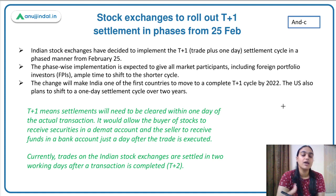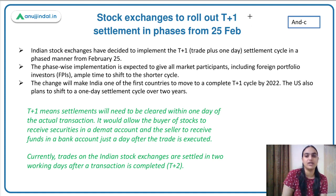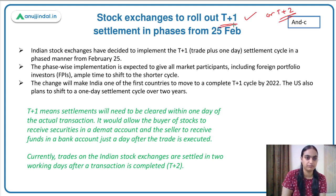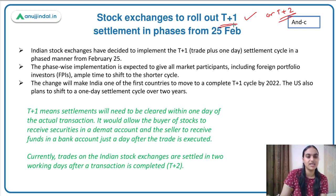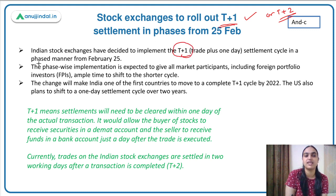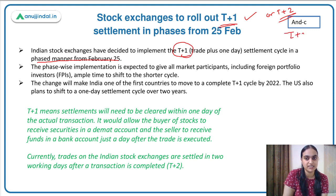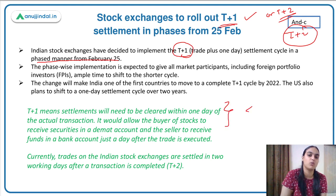The reason this is being discussed is that SEBI allowed stock exchanges to opt for either a T+1 or T+2 settlement cycle, whichever they prefer. Now, the news is that Indian stock exchanges have approved that they will follow the T+1 cycle from next year onwards. The Indian stock exchanges have decided to implement the T+1 settlement cycle in a phased manner from 25th February.